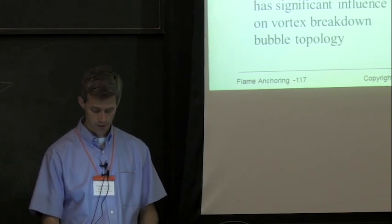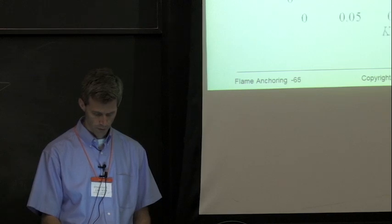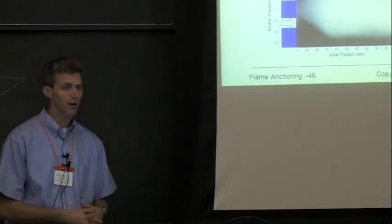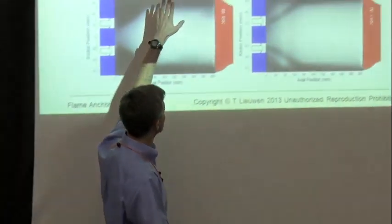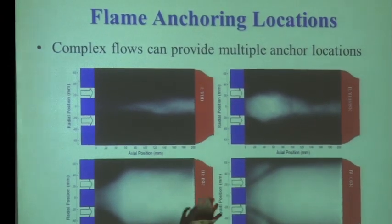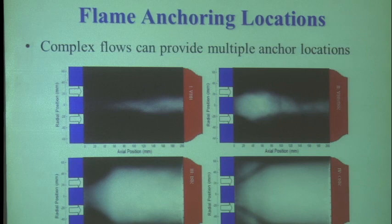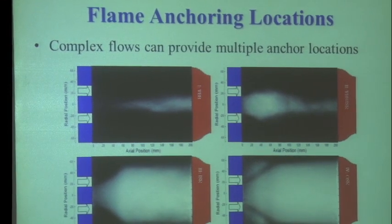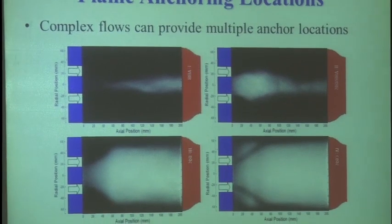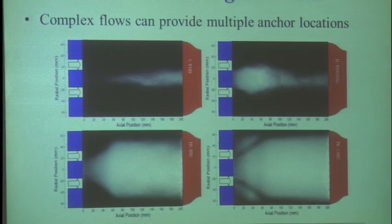Just to illustrate that: going back to a slide I showed earlier, I talked about different families of flame shapes — going from one to two to three to four as we increase equivalence ratio. It turns out that whether or not you even get configuration two totally depends upon your downstream contraction ratio. We did these experiments where, as you increase contraction ratio, you jump straight from one to three — you don't even get configuration two. Swirl flows are particularly sensitive to your downstream boundary conditions, even in very, very subsonic flows.